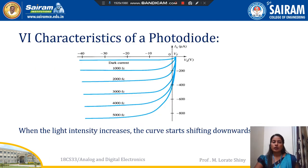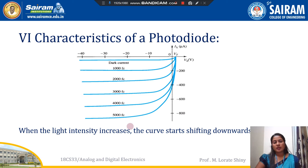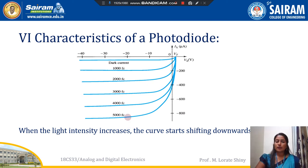Next, VI characteristics — voltage and current characteristics of the photodiode. The graph is plotted between forward voltage bias, reverse voltage bias, forward current, and reverse current. You can see the dark current, which appears when the light is not illuminated. As the light intensity increases, the curve shifts downwards. This is the V-I characteristics of the photodiode.